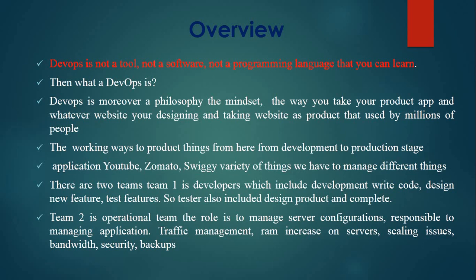Applications like YouTube, Swiggy, and other platforms manage many different things. There are two teams. Team 1 is the developer team, which includes writing code, designing new features, testing features — so testers are also included in designing and completing the product. Team 2 is the operational team. Their role is to manage server configuration, managing the application, traffic management, server load, scaling issues, bandwidth, security, and backups.